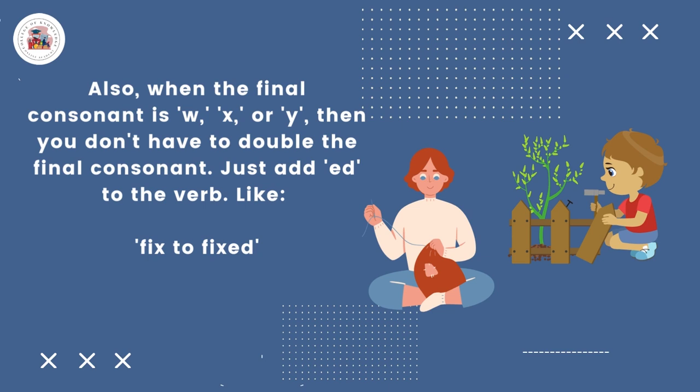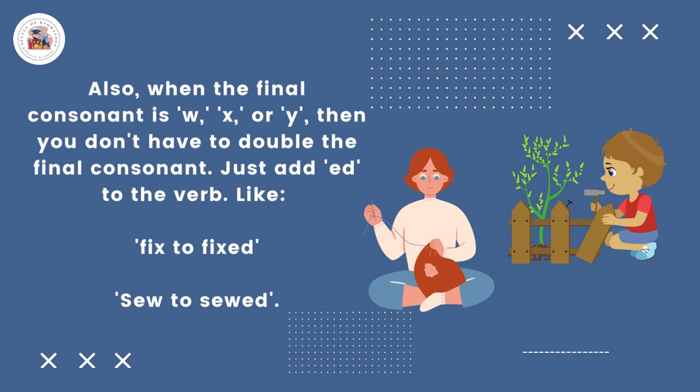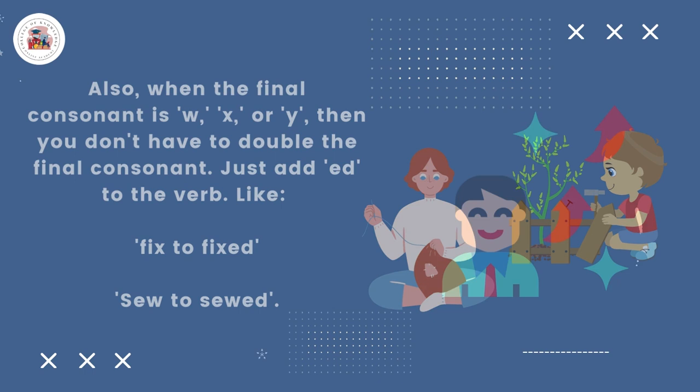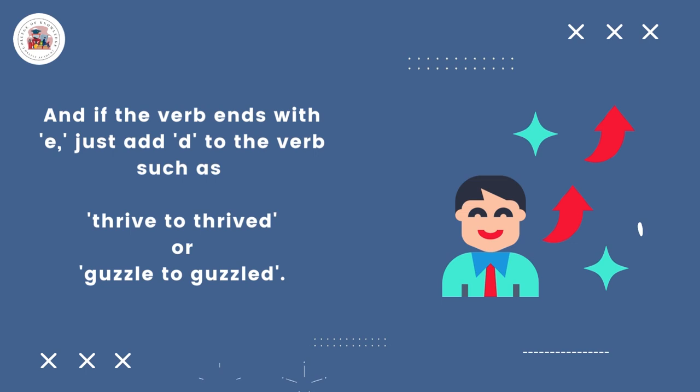Also, when the final consonant is W, X, or Y, you don't have to double the final consonant — just add -ed to the verb. Like: fix → fixed, sew → sewed. And if the verb ends with E, just add -d to the verb. Such as: thrive → thrived, guzzle → guzzled.